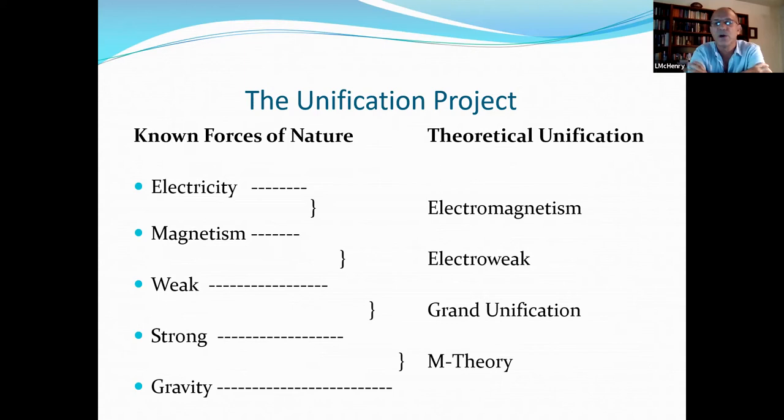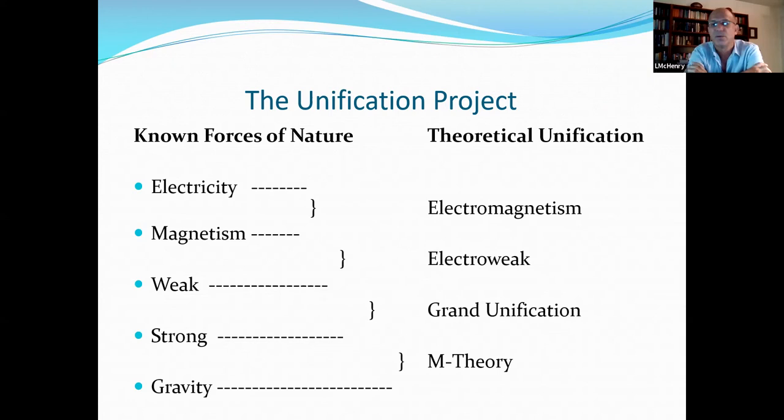So if we look at the unification project, that's just to say in our current paradigm, moving toward what might be called a theory of everything, or on this particular chart, the theoretical unification is M-theory. We start with electricity and magnetism as the forces unified by Maxwell in electromagnetism. Then the electro-weak unification comes from unifying electromagnetism and the weak force, and that was achieved mainly by Weinberg and colleagues. The grand unification then, which unifies the strong force. And then finally, how is it that we get gravity unified with these other reasonably successful parts of theory unified?